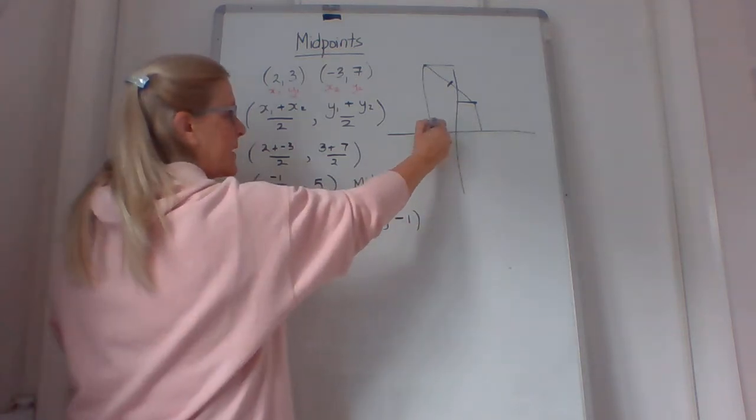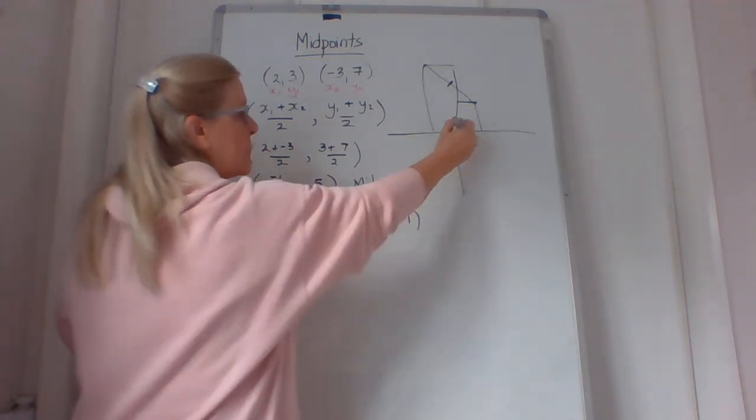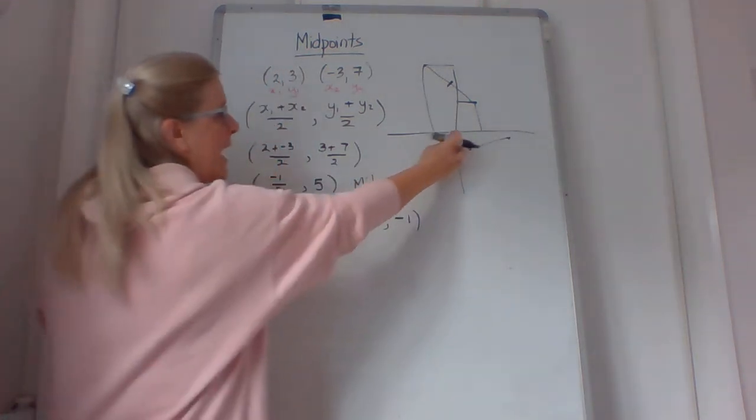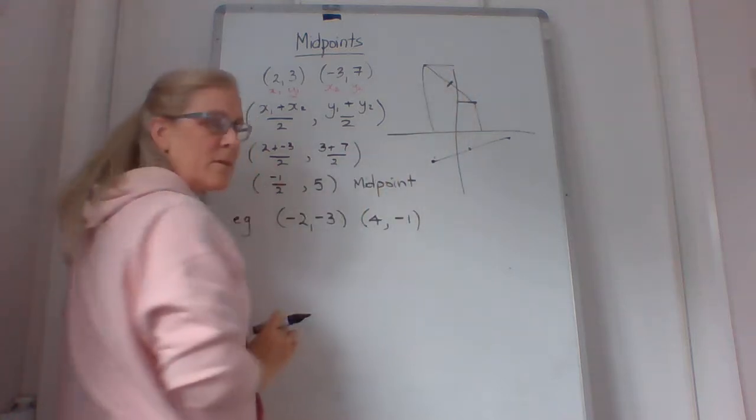Alright, (-2, -3), somewhere down here. (4, -1) is here. So halfway in between, it's somewhere here. You can see this one.